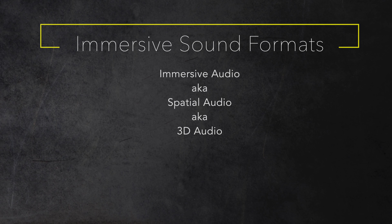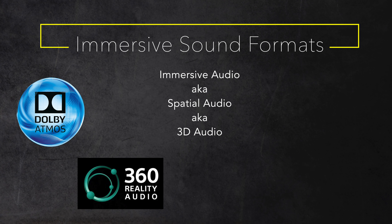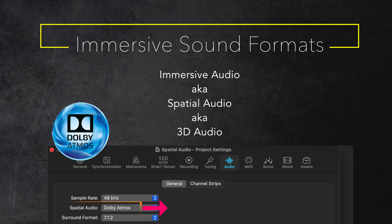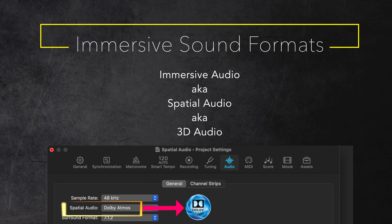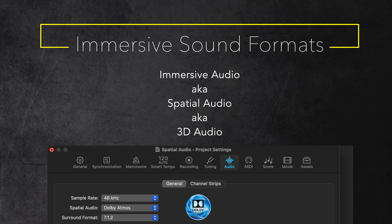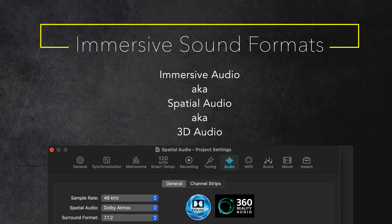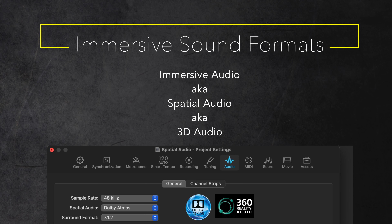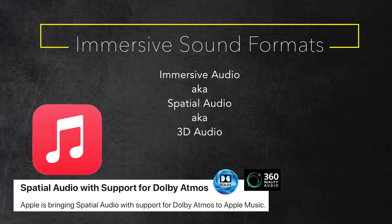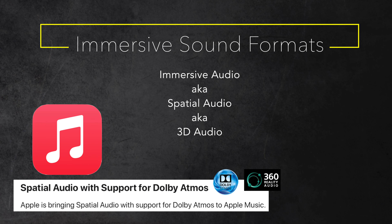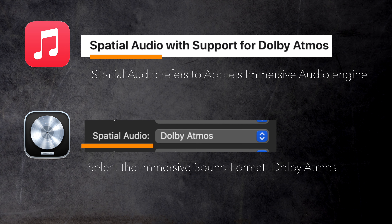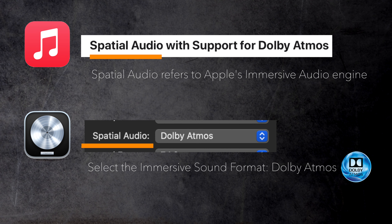Keep in mind, Dolby Atmos is just one of many immersive sound formats. There are Sony 360 Reality Audio, Auro 3D, and even Ambisonics. So Logic uses the spatial audio parameter to select the actual format that can produce three-dimensional audio — in this case, Dolby Atmos. Maybe a future Logic update could also support other formats like Sony 360 Reality Audio, and Apple Music might support that in the future too. So long story short, the spatial audio parameter in Logic has nothing to do with Apple's spatial audio engine. You just select an immersive sound format — in our case Dolby Atmos. That's it.